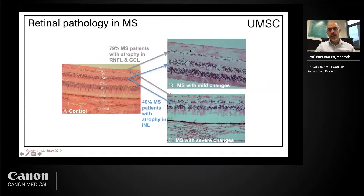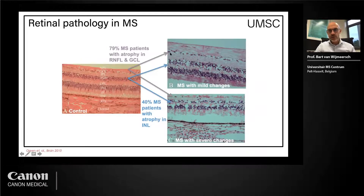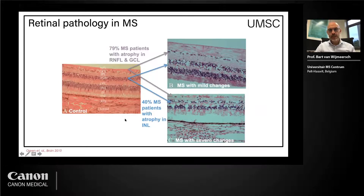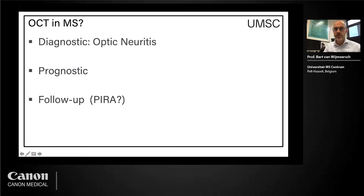In MS you can see changes. This is mild and this severe — 80% of patients have atrophy in the retinal nerve fiber layer and the ganglion cell layer. In severe cases, there is almost no retinal nerve fiber layer anymore and ganglion cells have been completely damaged. Also 40% of patients have problems with their inner nuclear layer. This is what you can see on OCT, because there is a possibility to show that in real life.